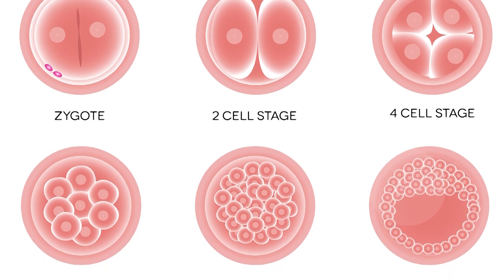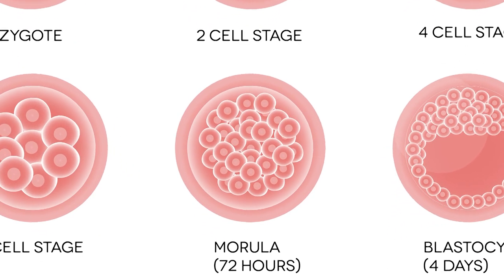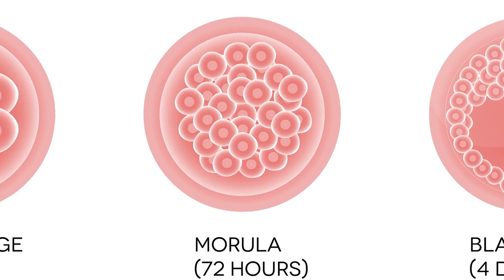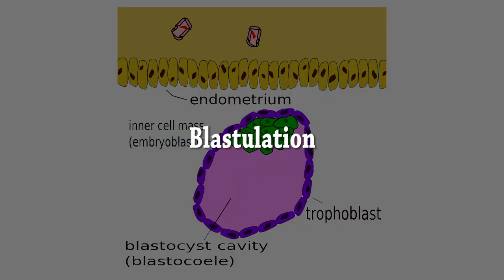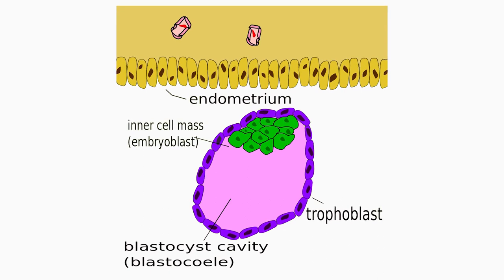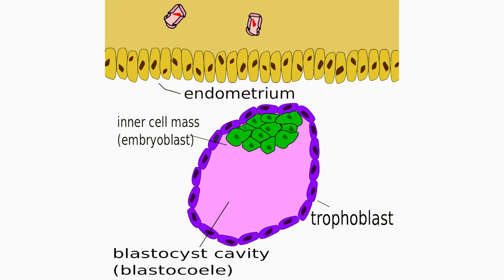When the cell number reaches around 16, the solid sphere of cells within the zona pellucida is referred to as the morula. The next stage is blastulation. Cleavage itself is the first stage in blastulation — the process of forming the blastocyst. Cells differentiate into an outer layer collectively called the trophoblast.